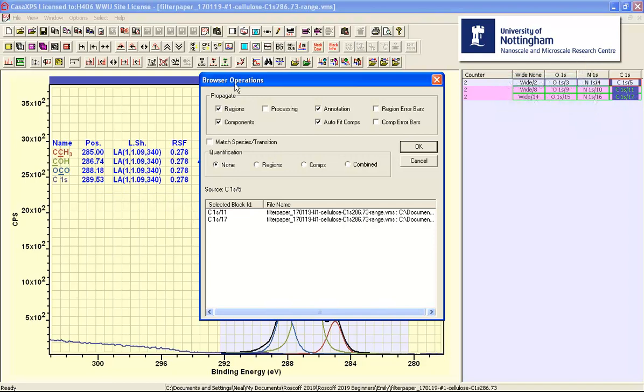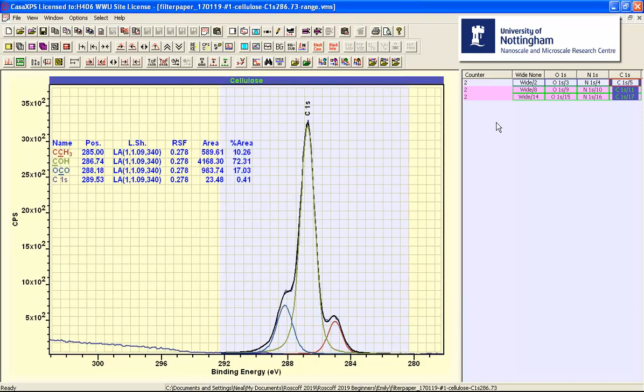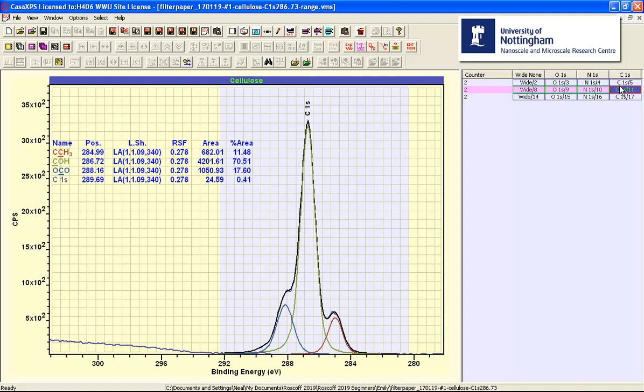So once we've prepared this browser operations dialog window, we say OK. The action occurs, we have a peak model that is now based on the original peak model in the first of these carbon-1s VAMAS blocks. And the same will apply to the oxygen.